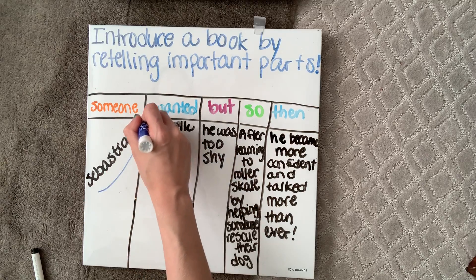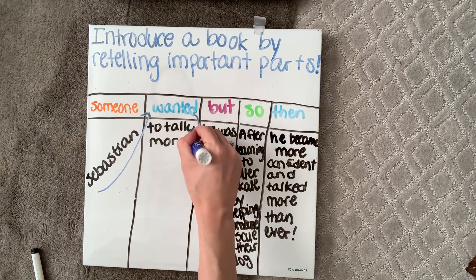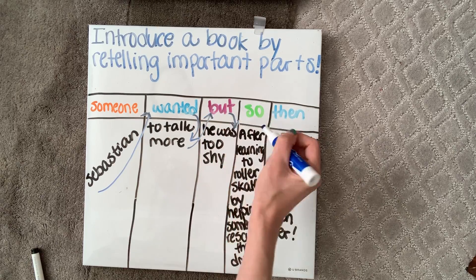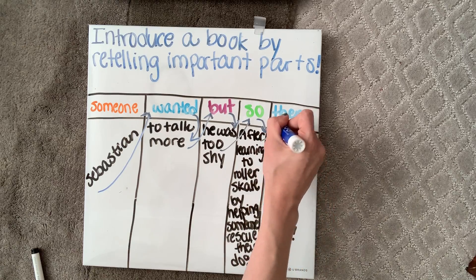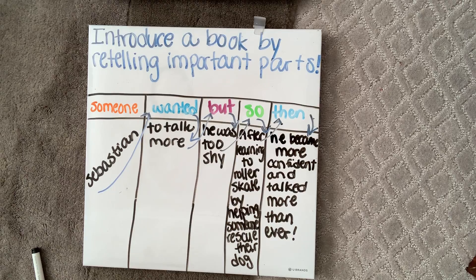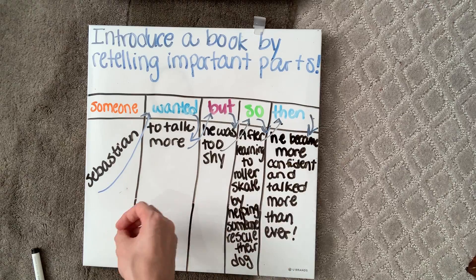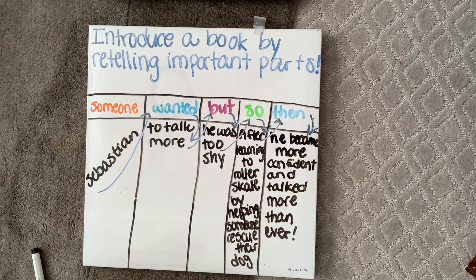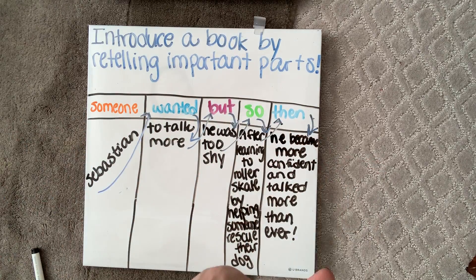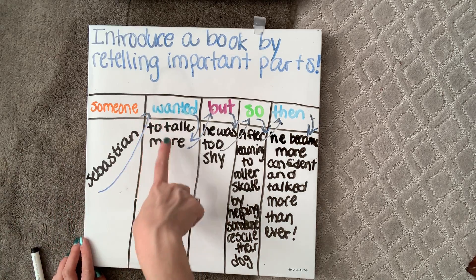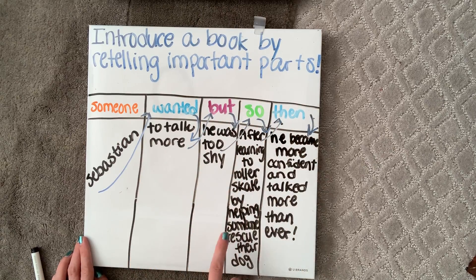So I'm going to say: Sebastian wanted to talk more, but he was too shy. So after learning to roller skate by helping someone rescue their dog, then he became more confident and talked more than ever. See how all of this really flows together and helps me put together that book introduction. If I was recommending Sebastian's Roller Skates to someone, I can make this chart and then introduce the book by saying, 'Oh my goodness, you really need to read this book. It's about Sebastian who wanted to talk more, but he was too shy. So after learning to roller skate by helping someone rescue their dog, then he became more confident and talked more than ever.'